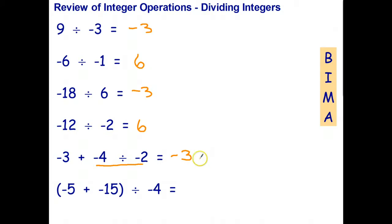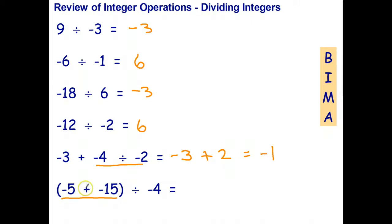I copy down the negative three and the plus. A negative divided by a negative is a positive, so negative three plus positive two. Then a bill for three dollars plus two dollars — I pay off part of the bill and still owe one dollar. Down here I do the operation in brackets first: negative five plus negative fifteen is negative twenty. Then negative twenty divided by negative four — a negative divided by a negative is a positive — gives positive five.